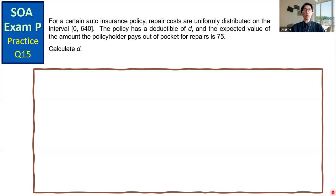SOA Exam P practice question number 15. For a certain auto insurance policy, repair costs are uniformly distributed on the interval [0, 640]. The policy has a deductible of D, and the expected value of the amount the policyholder pays out of pocket for repairs is 75. Calculate the value of D.